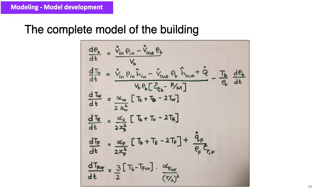This is the complete model of the building in state space form. There are six dependent variables: density of air, temperature of air, temperature of the wall, temperature of the roof, temperature of the floor, and temperature of the furniture. The arrows show the independent variables used in the model, such as volumetric flow rates and heat flow rates, and the remaining quantities are the parameters.